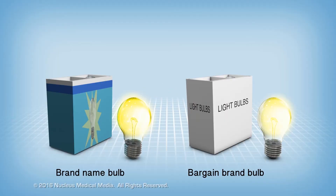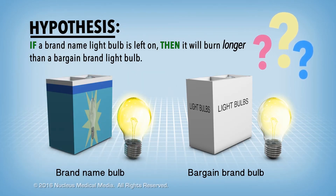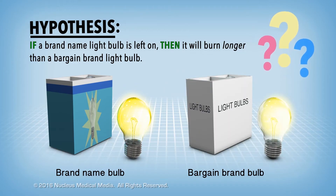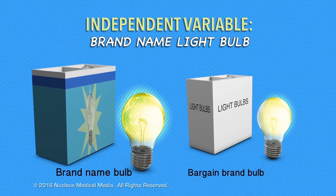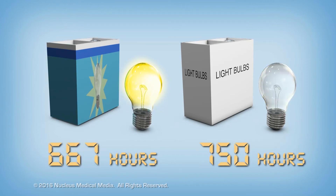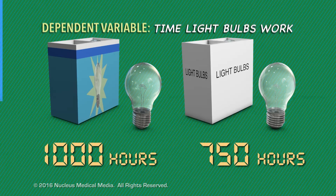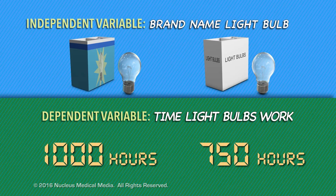Here's a final example to help you understand these terms. You predict that if a brand name light bulb is left on continuously, then it will burn longer than a bargain brand light bulb used in the same manner. In this case, the independent variable is the brand name light bulb. You're measuring how many hours the light bulbs work before burning out, which is the dependent variable.